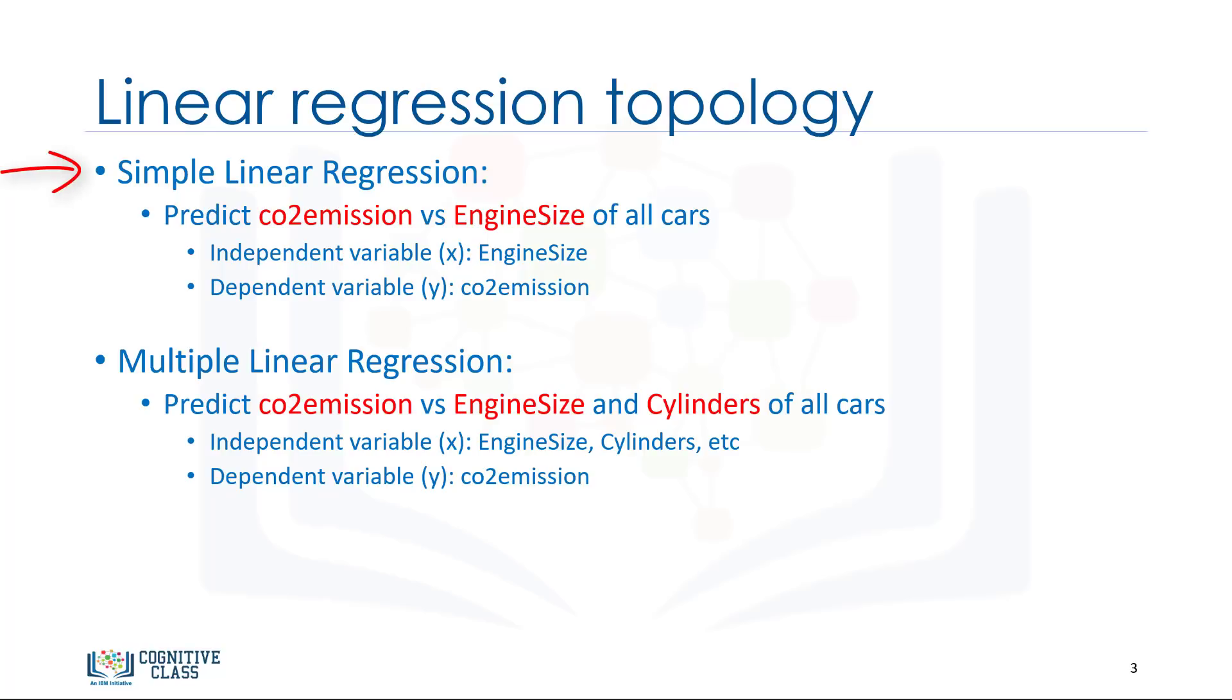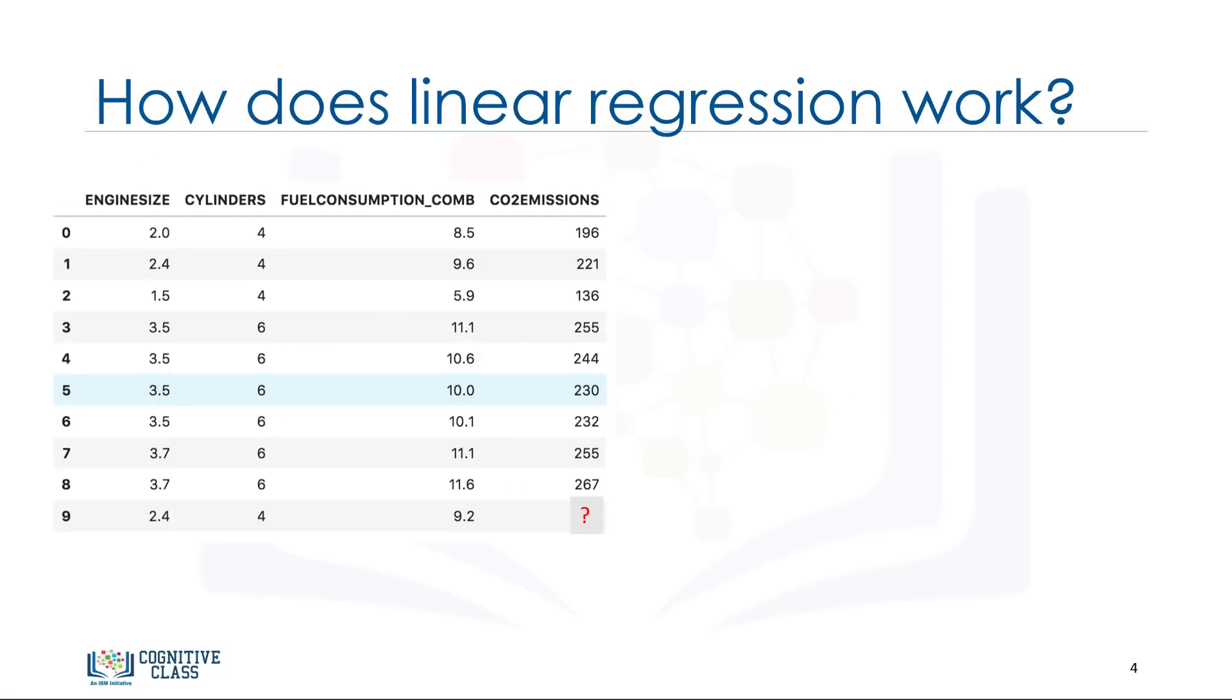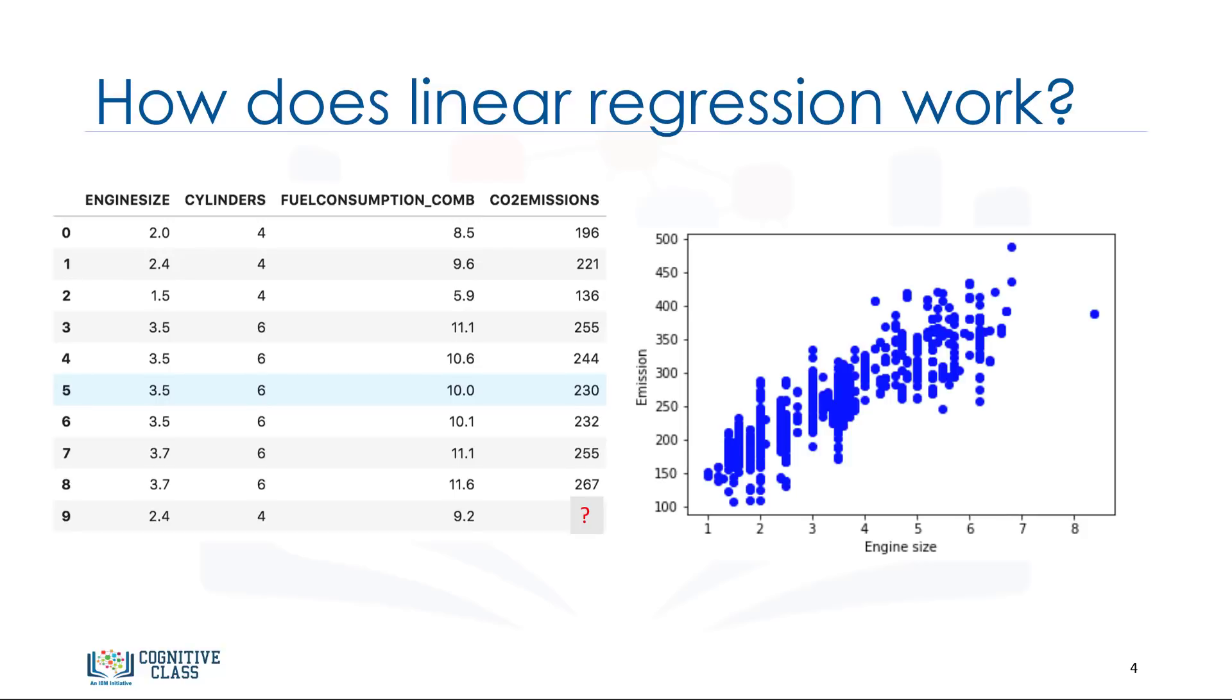Now, let's see how linear regression works. Okay, so let's look at our data set again. To understand linear regression, we can plot our variables here. We show engine size as an independent variable and emission as the target value that we would like to predict. A scatter plot clearly shows the relation between variables where changes in one variable explain or possibly cause changes in the other variable. Also, it indicates that these variables are linearly related.